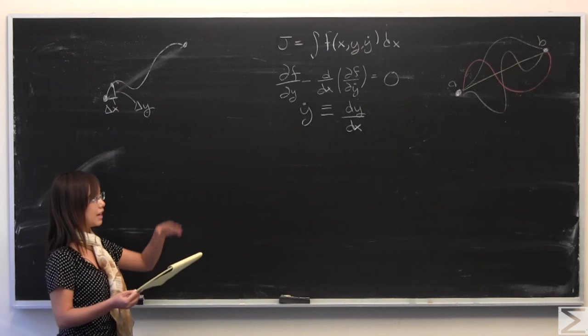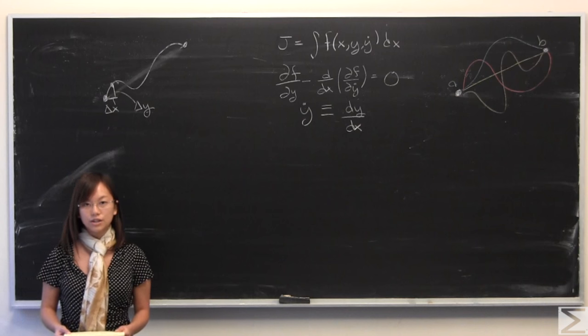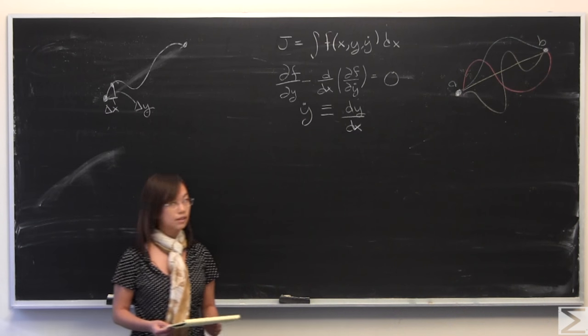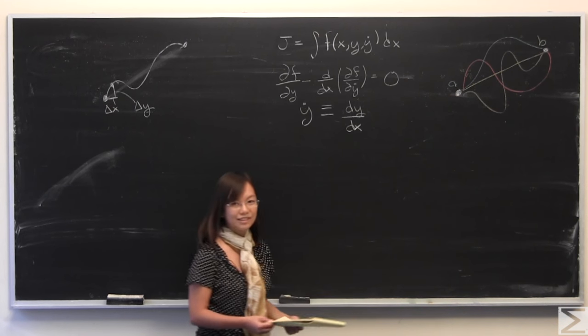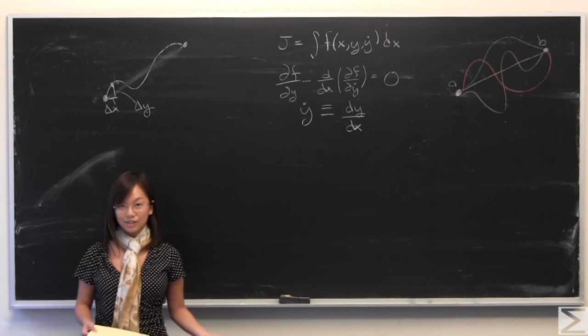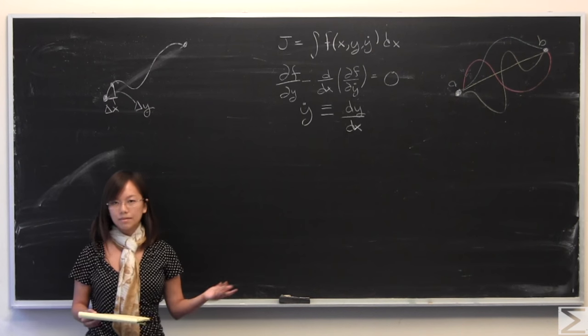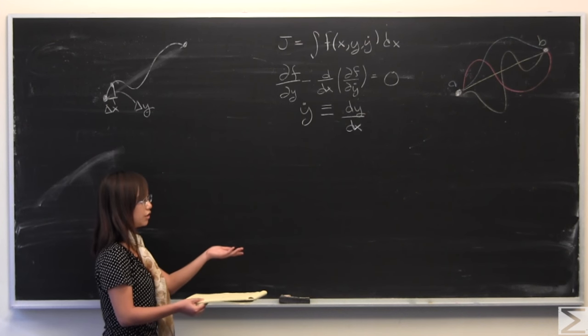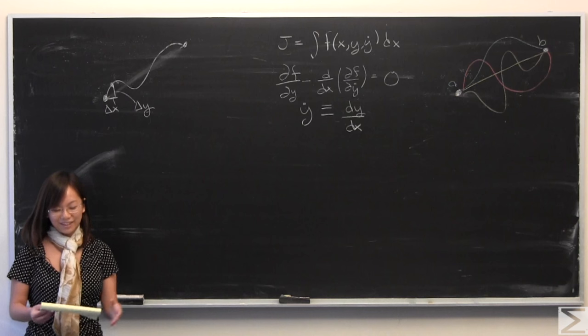Okay, so the problem asks you to use the Euler-Lagrange equations to show that the shortest distance between two points, I call them A and B, is a straight line with a constant slope. So this is a really cool problem, I think, because it's something that people tend to assume is true, but it's never really shown. And now we can finally show it.